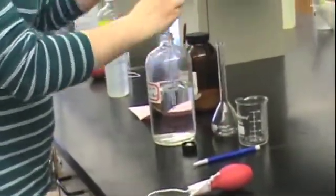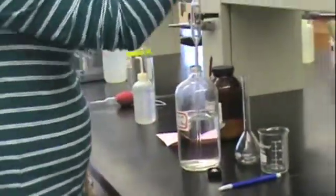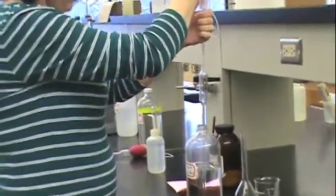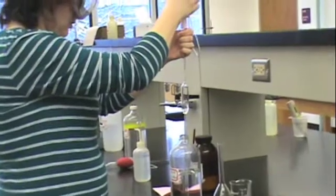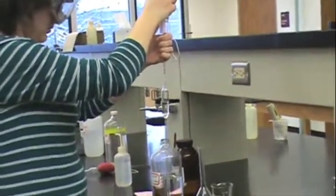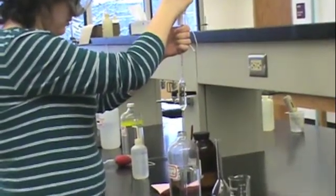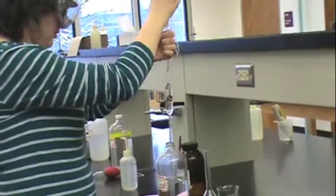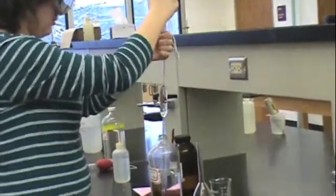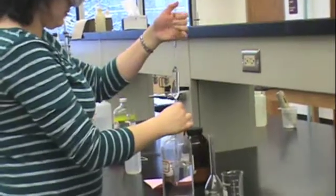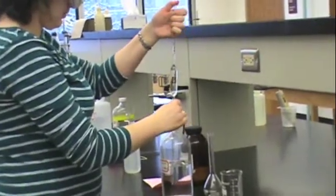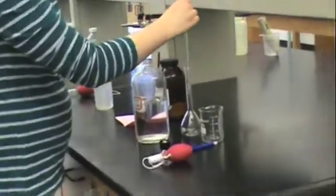Measure out 25 milliliters of acetic acid using the pipette. If you need to review this technique, you can check out the video called Using a Pipette. Add this to your volumetric flask.